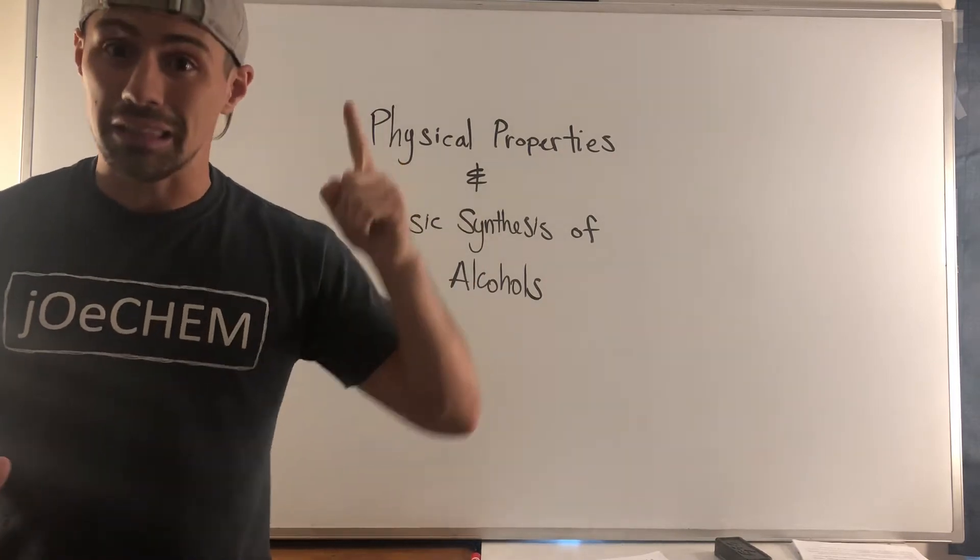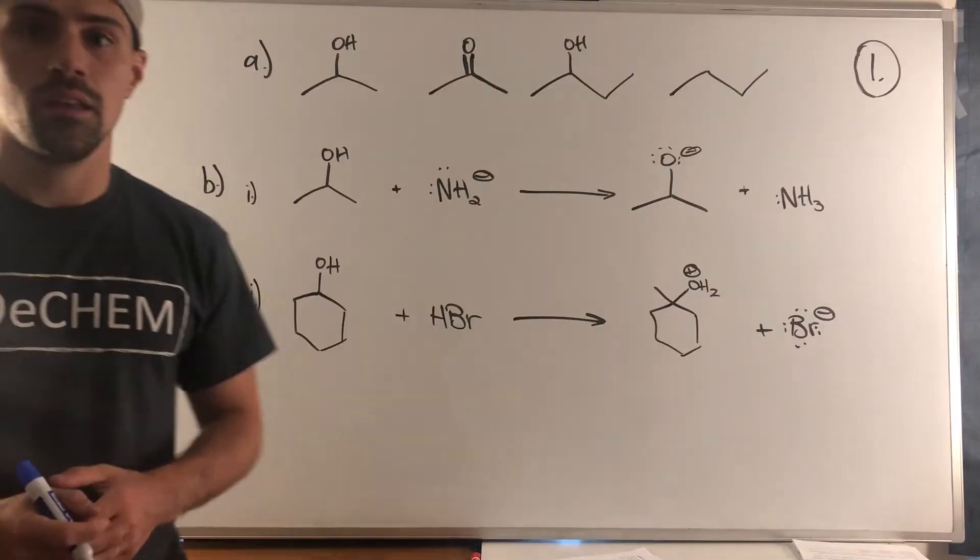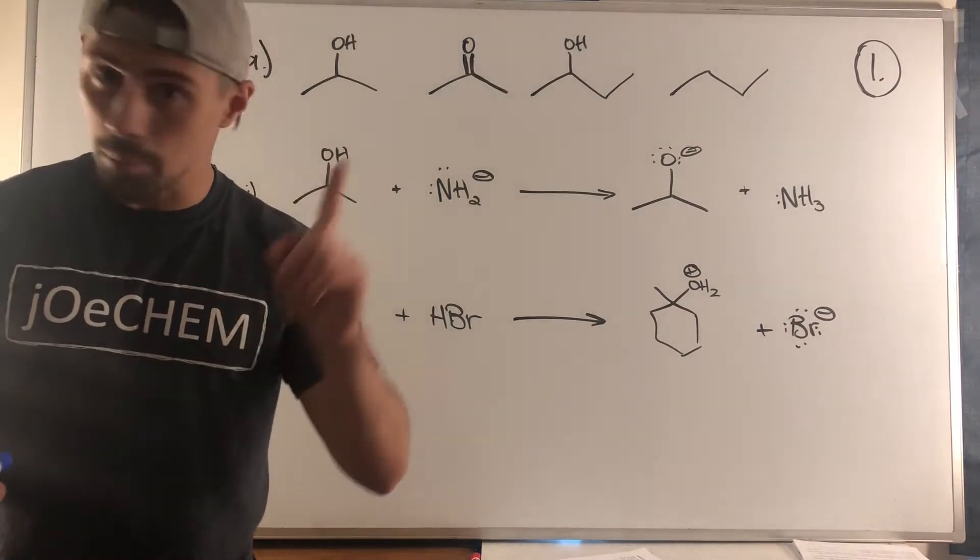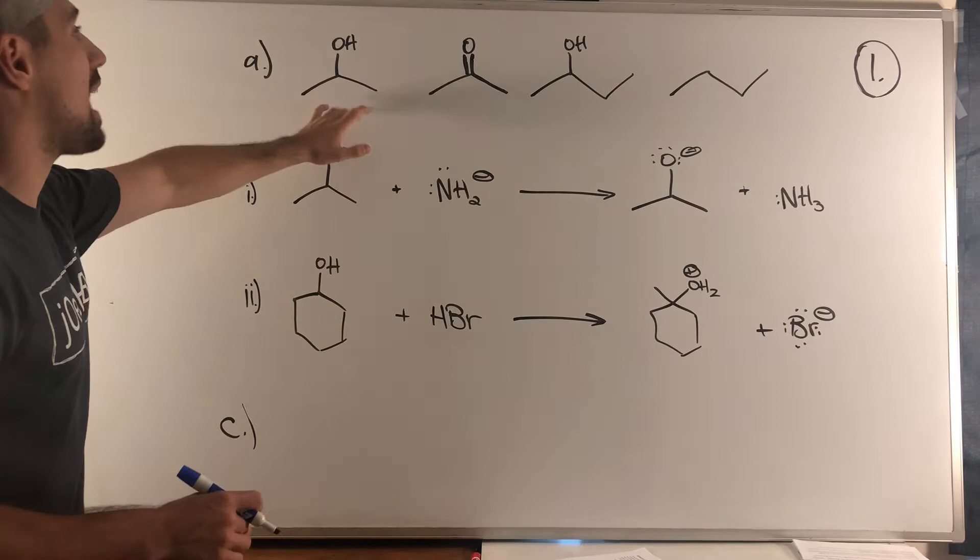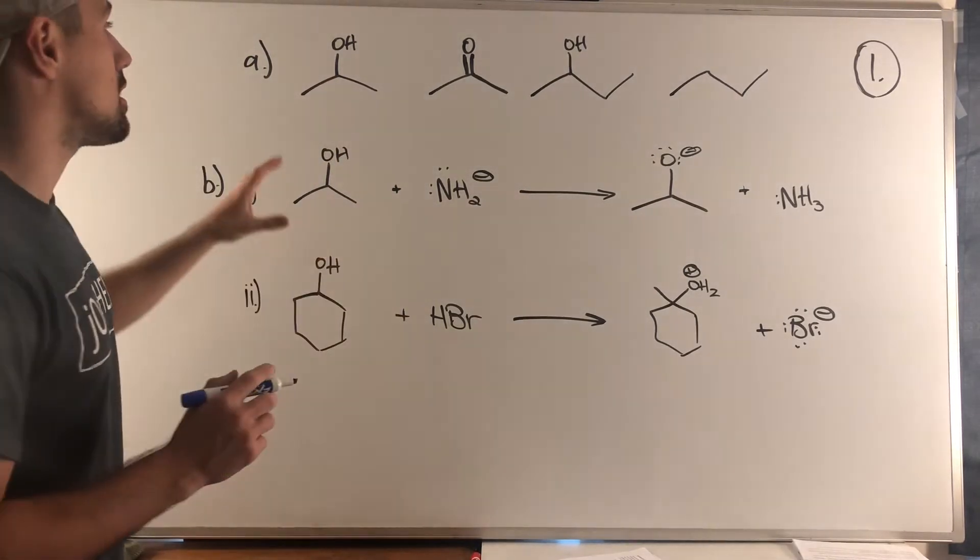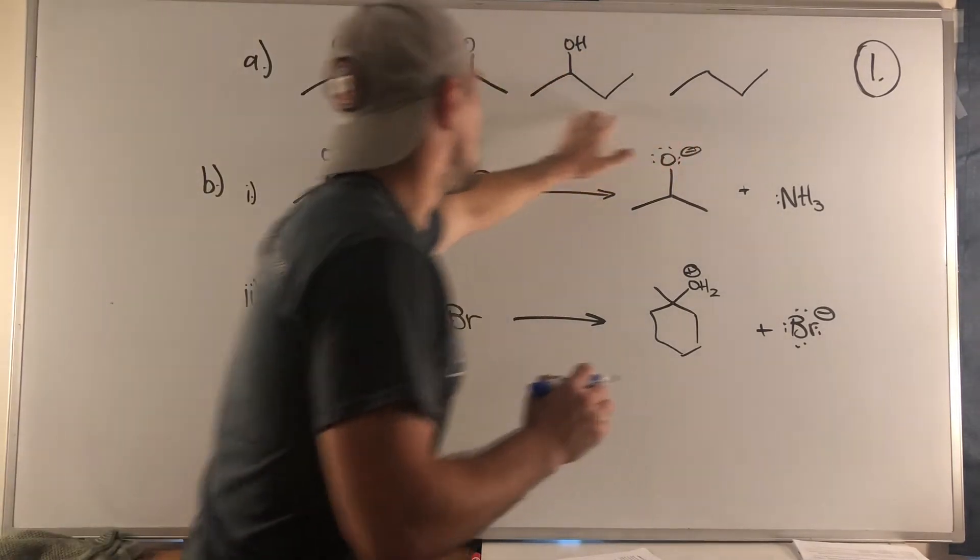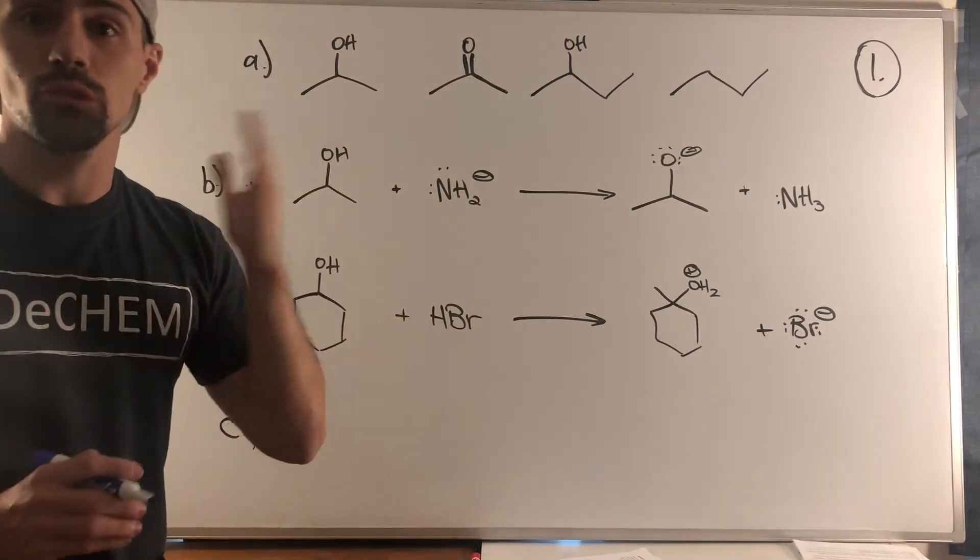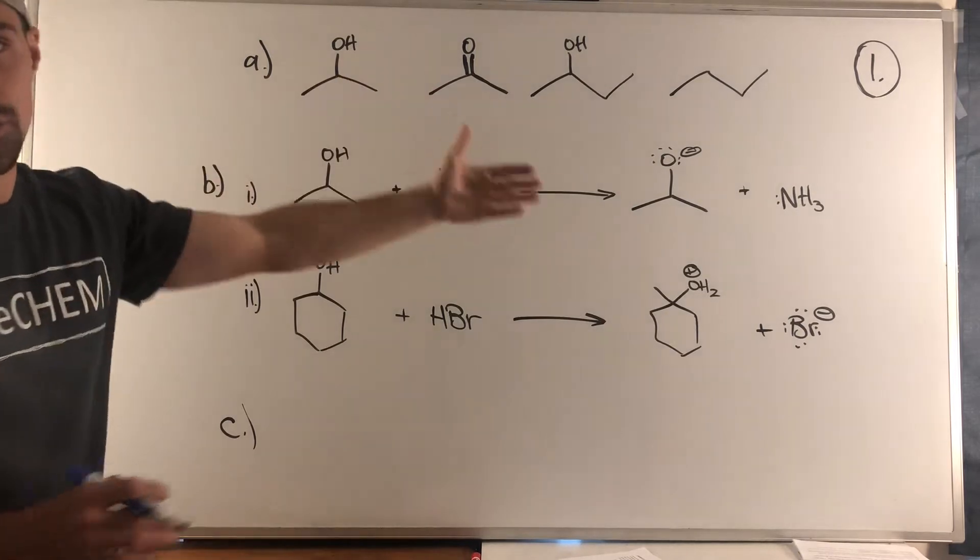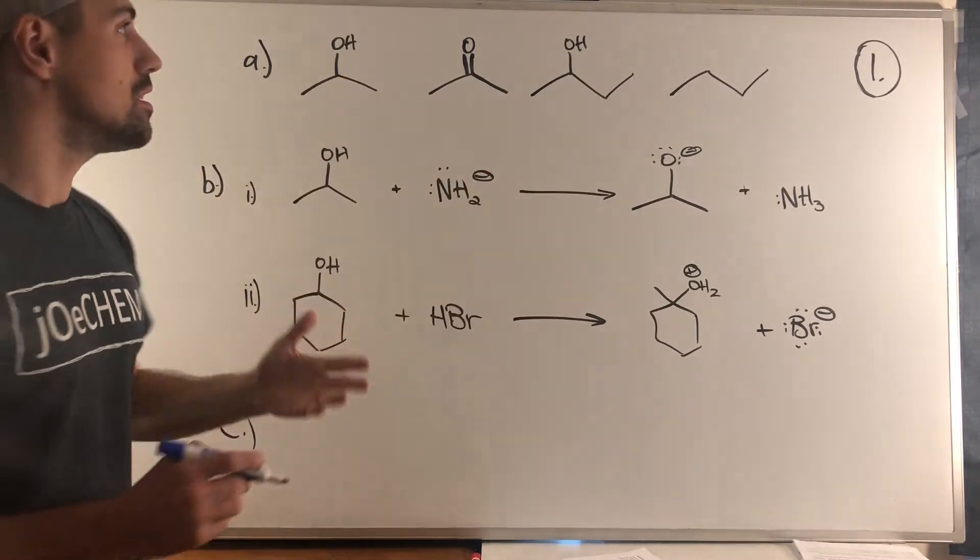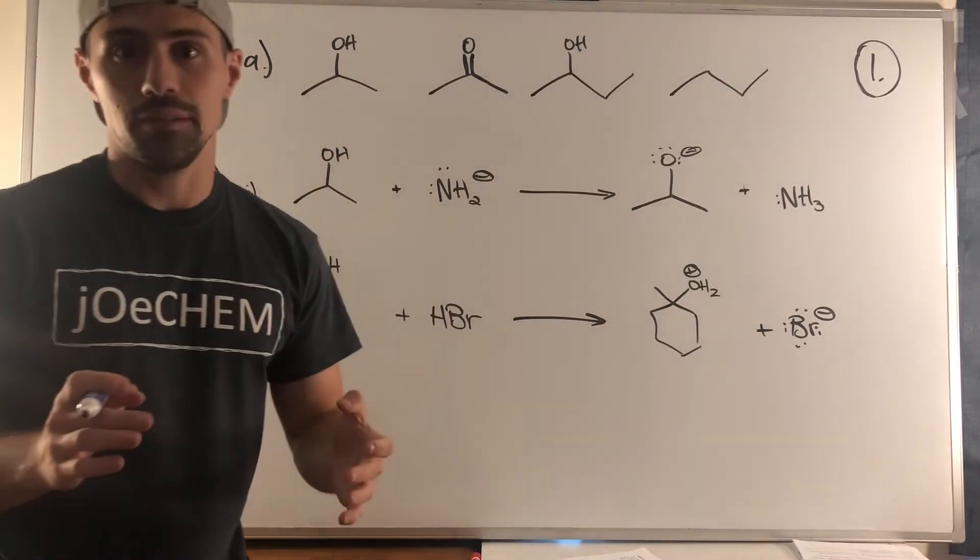Let's tackle problem one. In problem one we have A, B, and C. Starting with A, the first thing we're tasked with is given these four structures, we need to rank from one to four, one being the lowest boiling point, four being the highest.